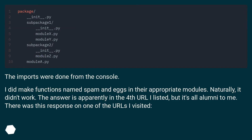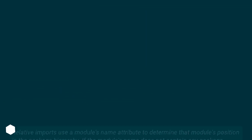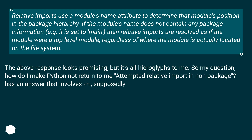The imports were done from the console. I did make functions named spam and eggs in their appropriate modules, but naturally it didn't work. The answer is apparently in one of the URLs I visited: relative imports use a module's __name__ attribute to determine that module's position in the package hierarchy.